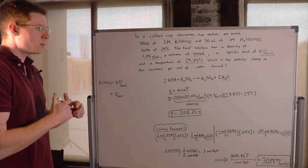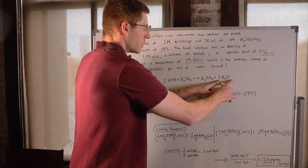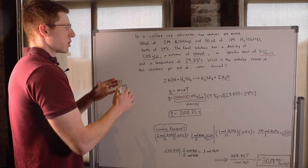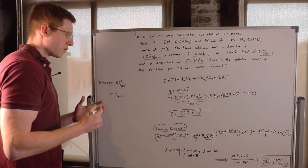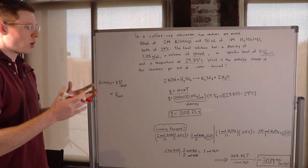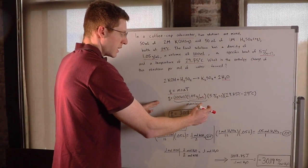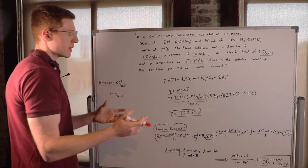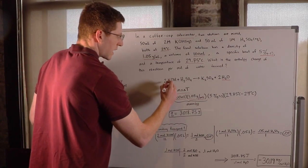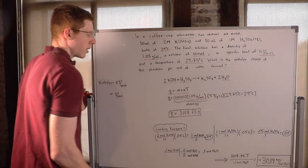So how do we connect this to one mole of water? They want to know the enthalpy change of this reaction per mole of water formed. First, we have to figure out how much water is going to be formed by this mixing process, and then we need to turn that into moles. This is our reaction, and we have two reagents with water as one of the products.